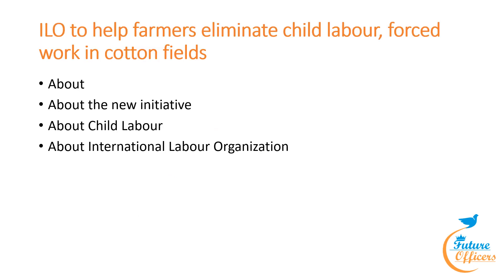The first topic is ILO helping farmers eliminate child labor and forced work in cotton fields. Cotton and hybrid cotton seeds from India are listed by the US Labor Department as products made using child or forced labor. To address this issue, the Confederation of Indian Textile Industry and the International Labor Organization have launched a new project to curb child labor.